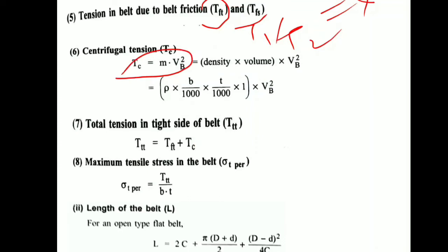In case of belt drive, mass is converted into density times volume. So density is ρ, volume is nothing but b×t divided by 1000. This divided by 1000, that is 10⁶ times 1, that is the volume b×t×1. So you must remember this while calculating Tc.